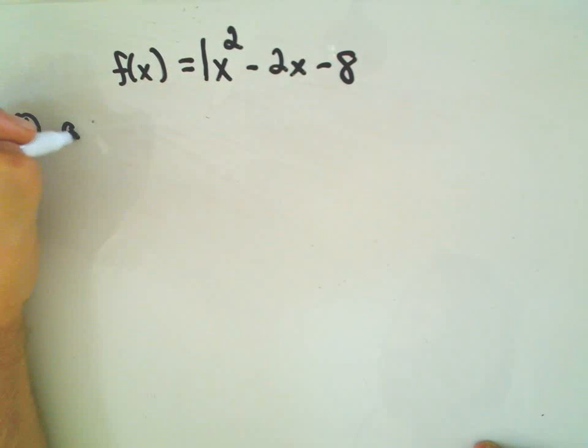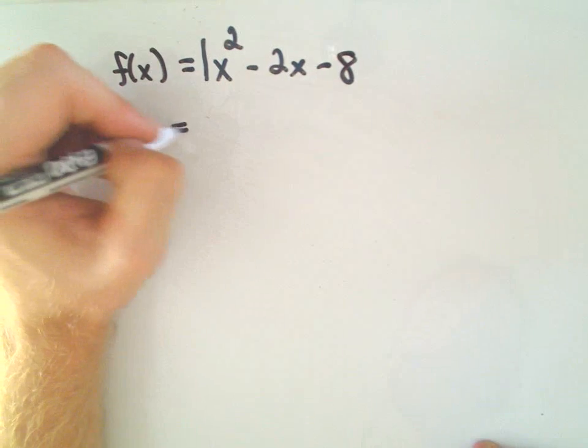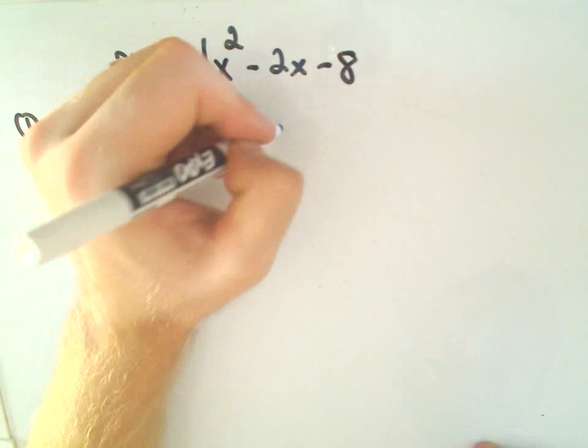Since the coefficient is 1 on the x² term, well, that's greater than 0. That means that our parabola will open upwards.